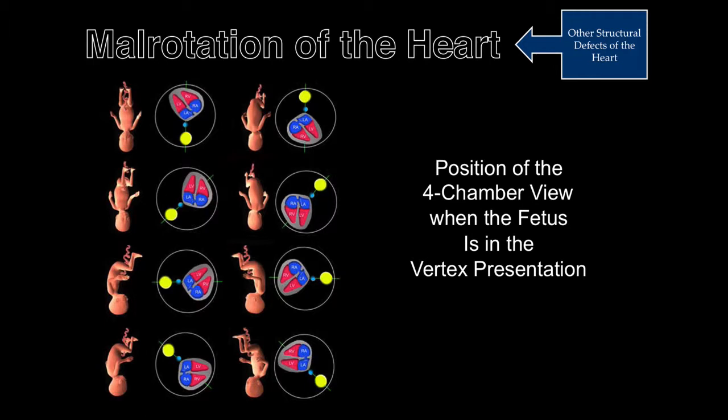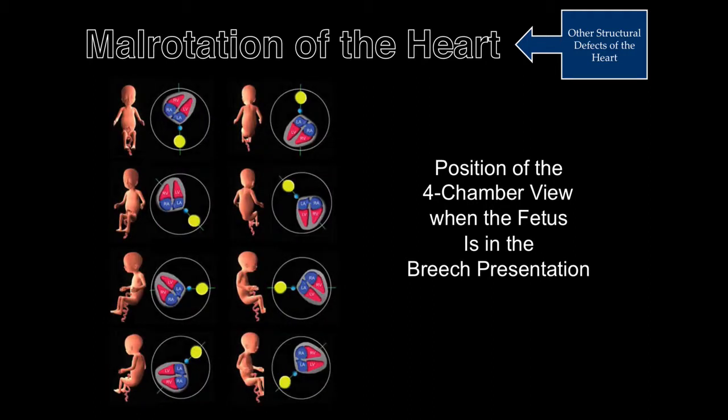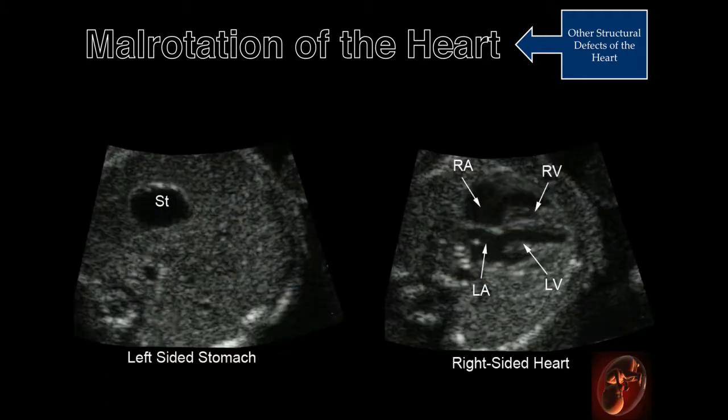This illustrates the position of the four-chamber view when the fetus is in the vertex presentation. This illustrates the position of the four-chamber view when the fetus is in the breech presentation. This demonstrates a case of dextrocardia, with the stomach on the left and the heart rotated to the right.